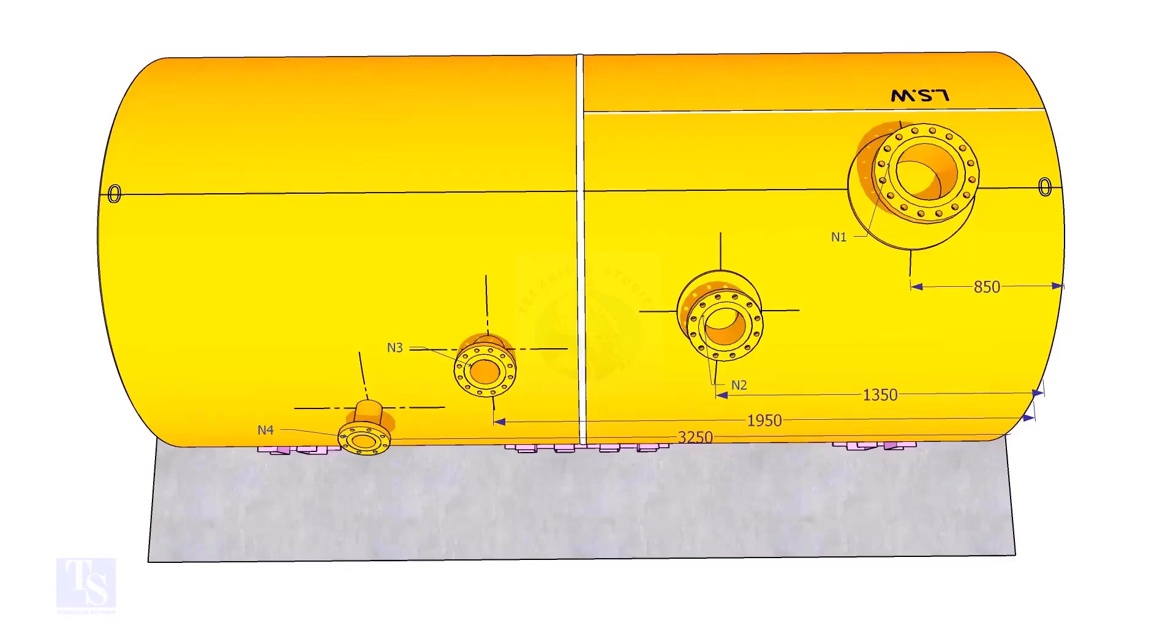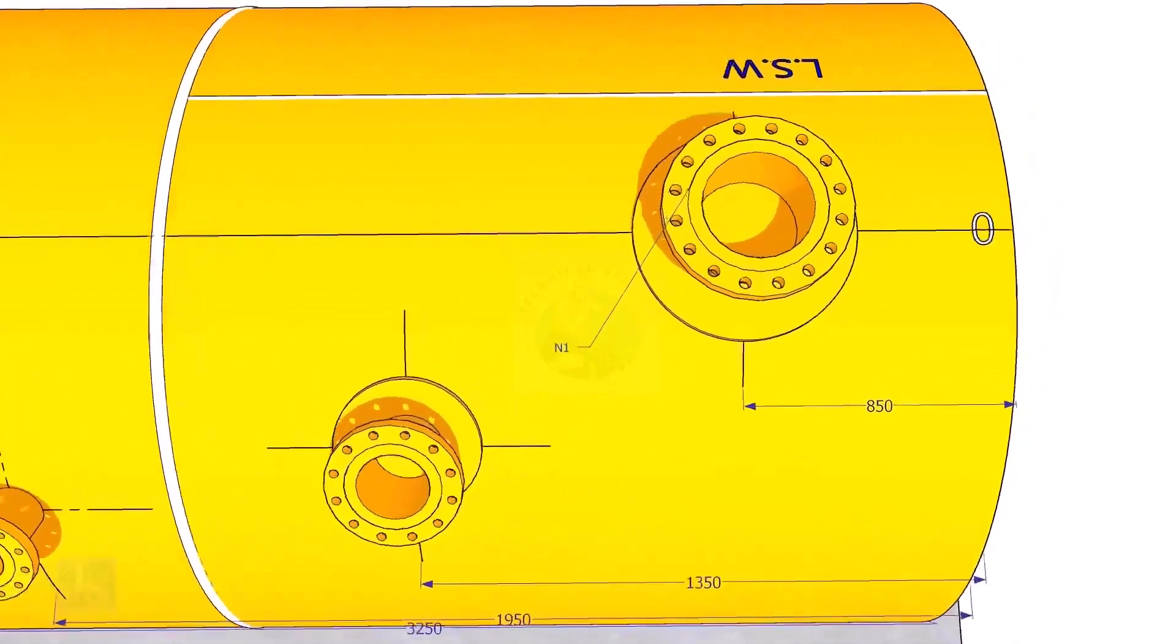Extend the nozzle N1 center line up to the other end of the shell and mark it as zero degree.